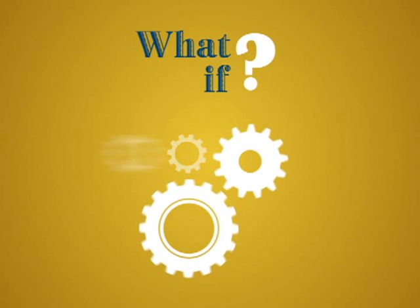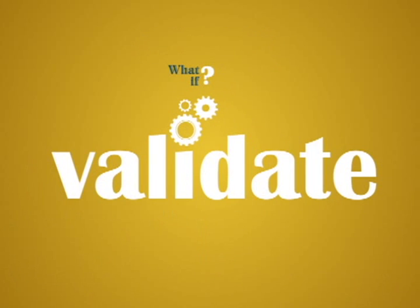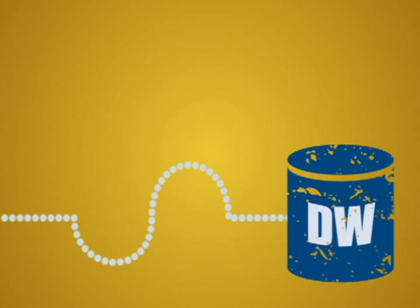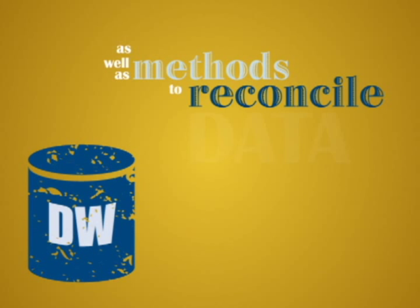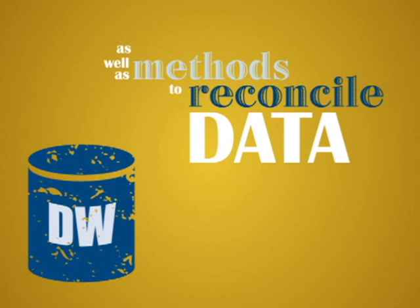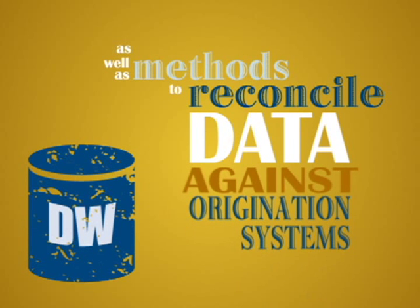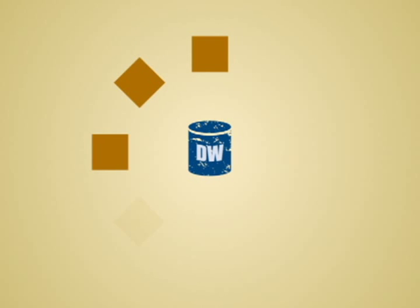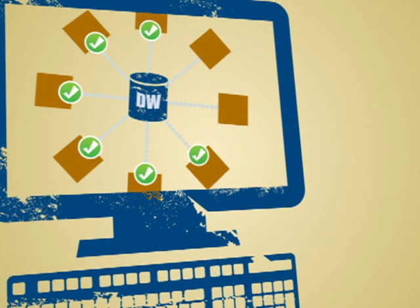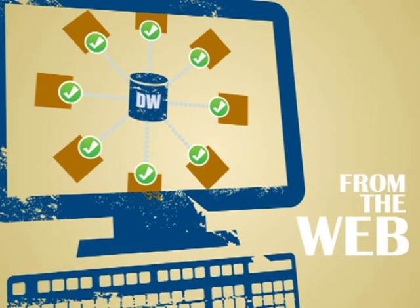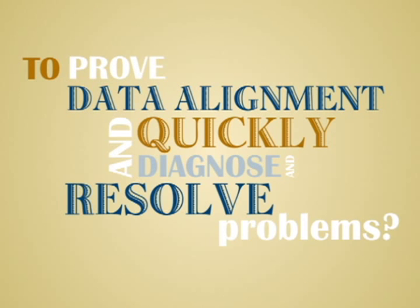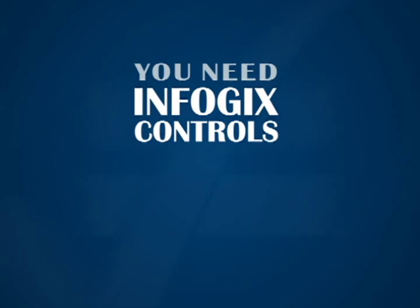What if you had an automated way to validate all of the information coming into your data warehouse, as well as methods to reconcile data in the warehouse against origination systems? What if you had a proof-positive audit trail of information accessible from the web to prove data alignment and quickly diagnose and resolve problems? You need InfoJix Controls.